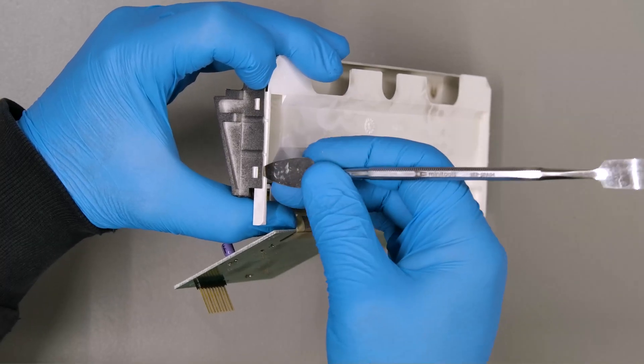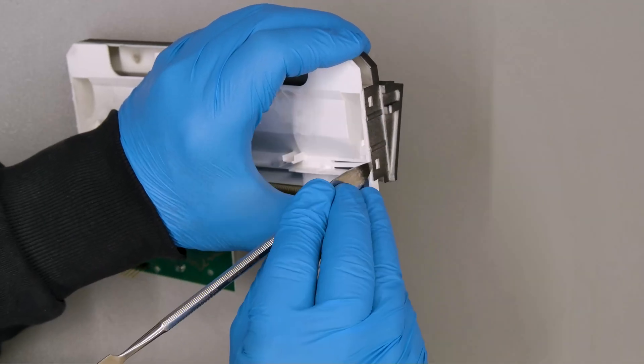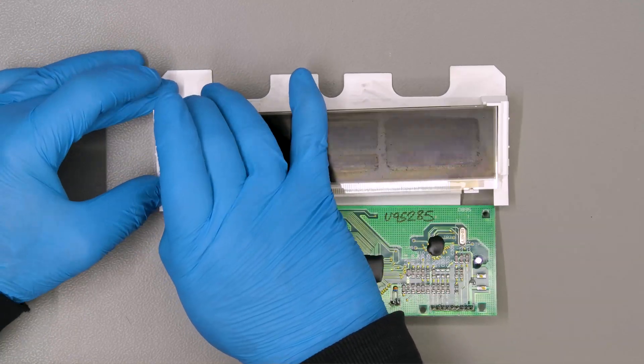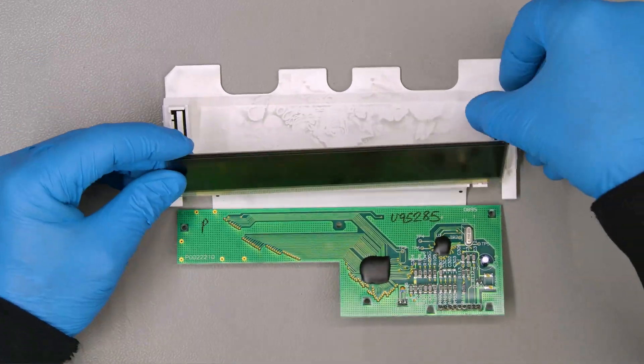With the head of the spudger, take off the front cover of the LCD. Then, release it from the white plastic base.